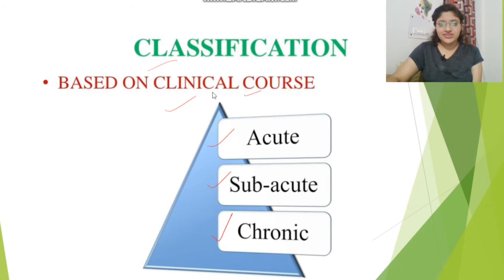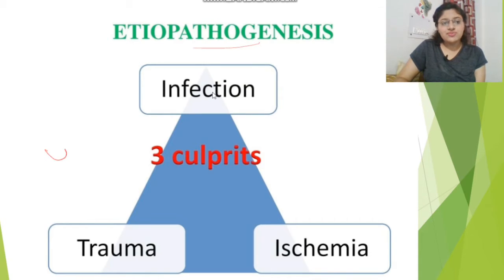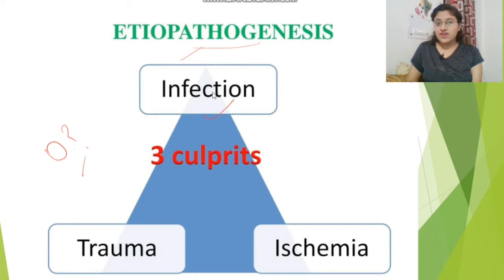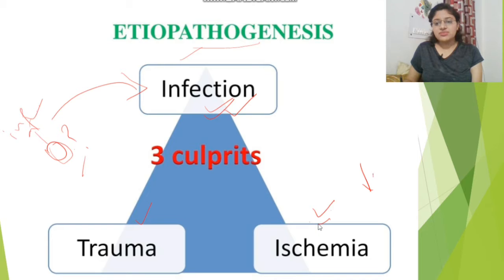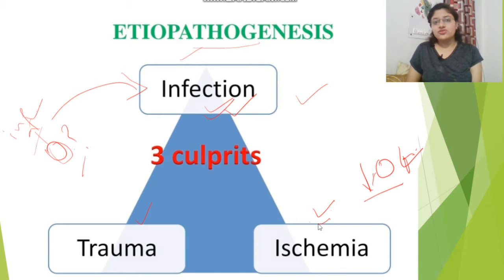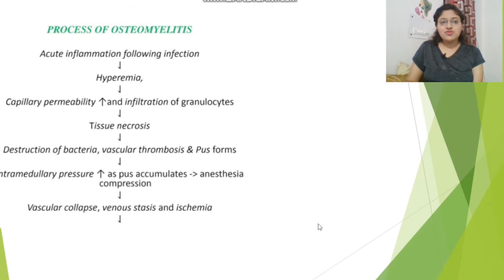What is the reason for osteomyelitis? First is infection, second is trauma, and third is ischemia. When ischemia occurs, oxygen is reduced, leading to anaerobic bacterial infection, which then leads to osteomyelitis.